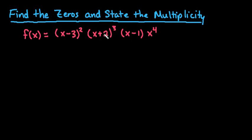So with this particular example, to find the zeros, it's already in factored form, so all we have to do is take each factor and set it equal to zero.